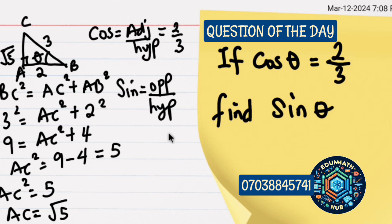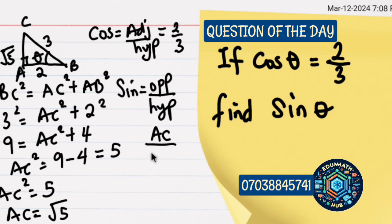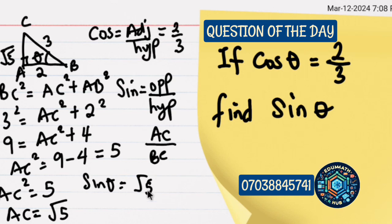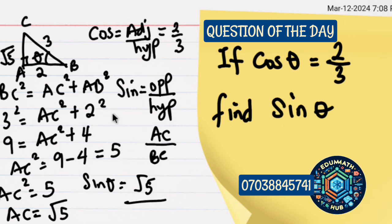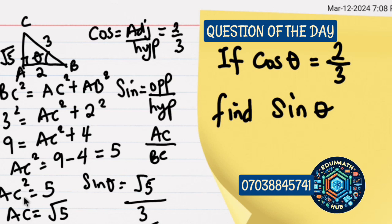You can easily see that sin in this question would be AC divided by BC. So sin θ will give us AC which is root 5 divided by BC which is 3. So the value of sin θ is root 5 divided by 3. Let's move to the next question.